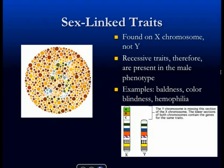Another way things are more complicated than in Mendel's experiments are sex-linked traits. Sex-linked traits are found on the X chromosome but not the Y. The difference between males and females is that females have two X's and males have X and Y. The X chromosome has approximately 1,100 genes on it; the Y chromosome has less than 50. The Y chromosome is what makes you male, but it is a very small chromosome with very little genetic material on it.